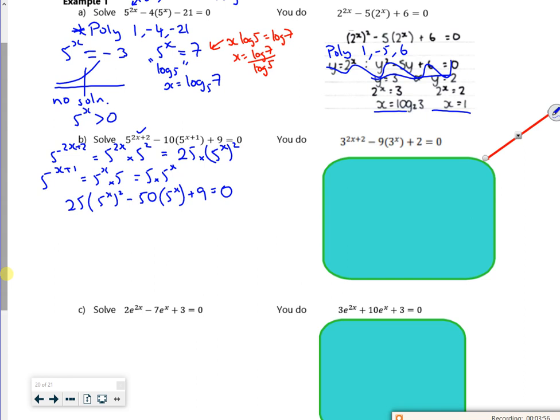So you can put y equals 5 to the x, but I'm just going to go straight to poly with 25, minus 50 and 9. Make sure that's right. Yep, yep, yep. So that gives me values out of a fifth and 9 over 5 in the calculator. So you've got to remember that's 5 to the power x. So the fifth is the same as 5 to the power minus 1. So that would imply that x is minus 1. With the other one I have to do log to base 5 of 9 over 5.